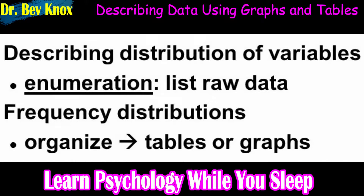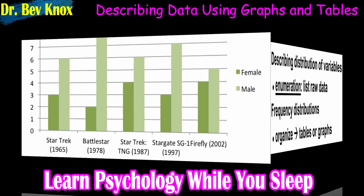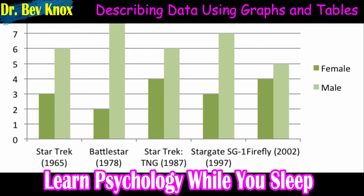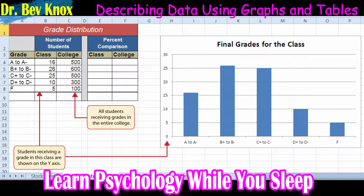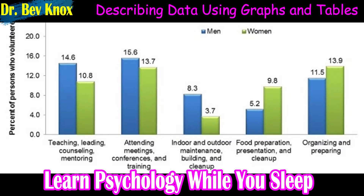When you have a large number of results to report, you can often do it more clearly and efficiently with a graph. When preparing graphs for APA style research reports, there are some general guidelines to keep in mind. First, the graph should always add important information rather than repeat information that already appears in the text or in a table.